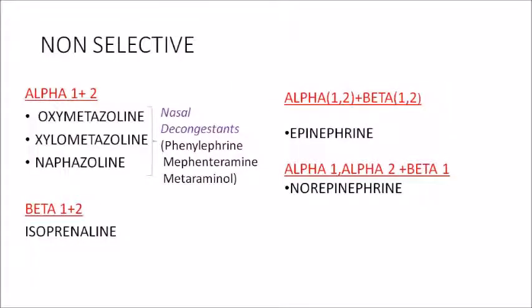Non-selective adrenergic drugs stimulating both alpha 1 and alpha 2 include oxymetazoline, xylometazoline, and naphazoline — used as nasal decongestants. Other nasal decongestants include phenylephrine, mephentermine, and metaraminol. Drugs acting on both beta 1 and beta 2 include isoprenaline. Epinephrine acts on all four receptors: alpha 1, alpha 2, beta 1, and beta 2. Norepinephrine acts on alpha 1, alpha 2, and beta 1 — never on beta 2.